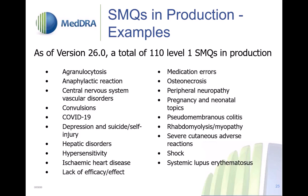Looking at the full outline of 110 Level 1 SMQs, the best description is that these are all bad things — anaphylactic reaction, convulsions, COVID-19, depression or suicidal ideation, hypersensitivity, lack of efficacy, pregnancy while using your product. They're all alarming signals. The whole intention of SMQs is to find these alarming signals in your data.